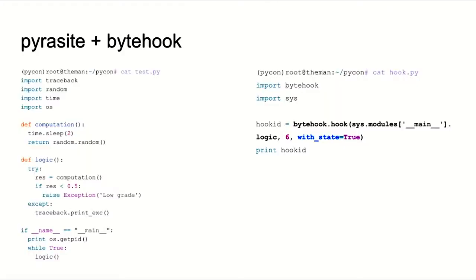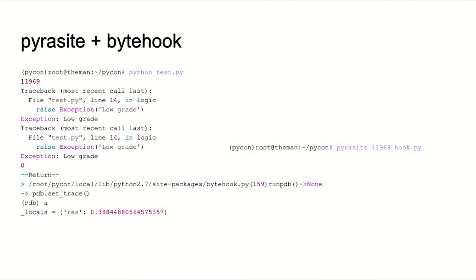Returning to the problem: I have code with an issue I want to investigate while it's running. On the right I code a simple file that calls ByteHook, telling it to go to the main module, to function logic, at line six. If you don't provide a function, it implicitly runs 'import pdb; pdb.set_trace()' and opens the PDB debugger. In another shell I run pyrocyte with the process ID and tell it to run hook.py. The next time the exception happens, PDB opens and I can examine local variables, take the exception stack trace, and look at function arguments.